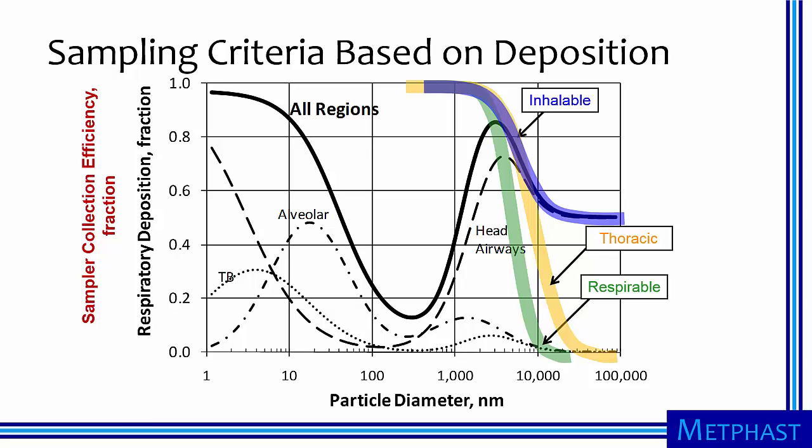Shown in yellow, the thoracic criterion is designed to collect only those particles that pass the head airways, nominally smaller than 10 micrometers. And shown in green, samplers based on the respirable criterion collect only those particles that can pass through to the deep lung, nominally smaller than 4 micrometers.